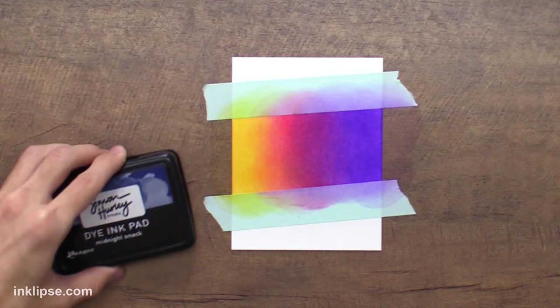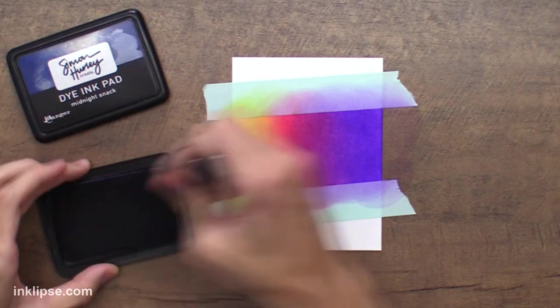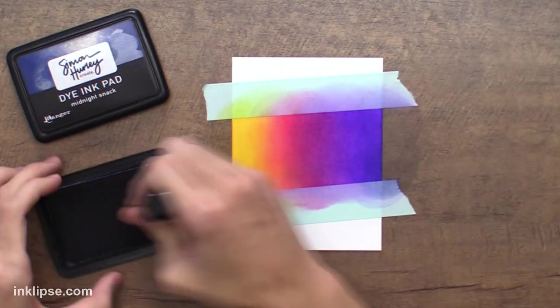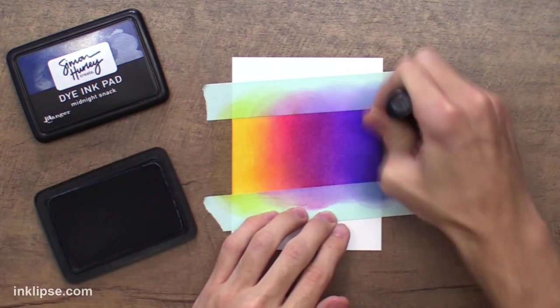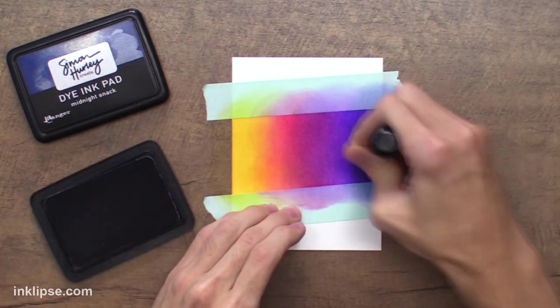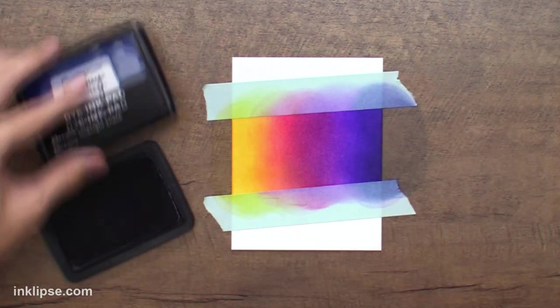Then we'll go in with a little bit of Crown Me on the edge here. And you know what? I think I want to add a little bit of Midnight Snack too. These are some of my favorite colors because it almost looks like a sky, but it's got very Halloween vibes to these colors, which I love. So that's just going to darken up the edge a little bit.